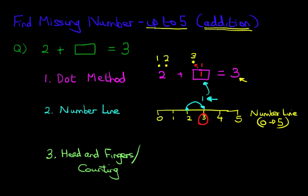Now all three methods apply slightly different principles, but the underlying message is the same. So, for the head and fingers counting method, let's rewrite the question again, and then we can do some workings. 2 plus something equals 3. Now how does the head and fingers method work?